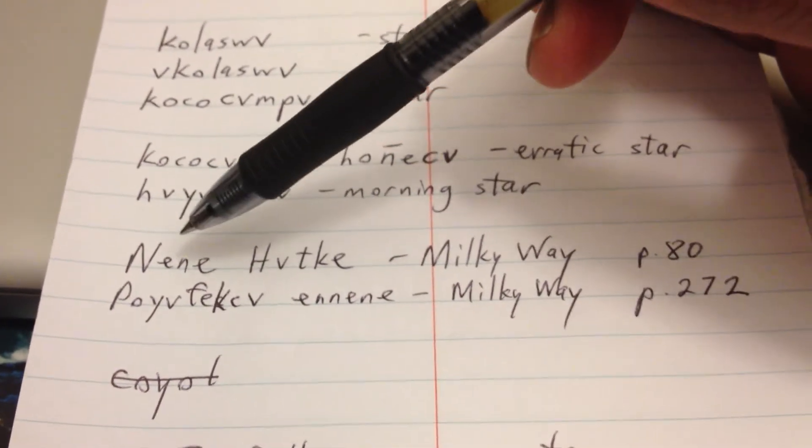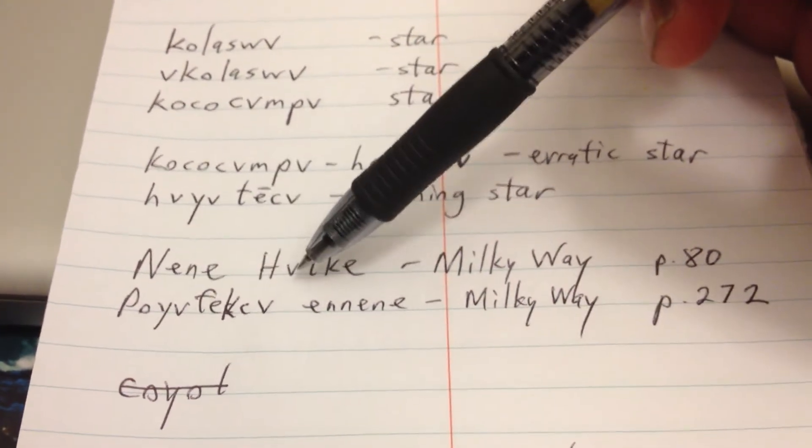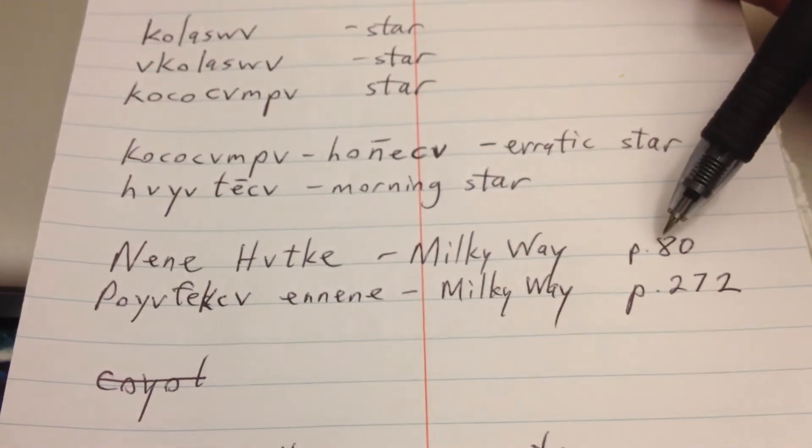Now we have nini hatki, meaning way or road that's white, hatki, the color white, Milky Way, page 80 in Martin and Moulton.